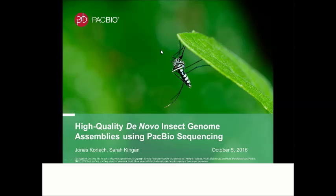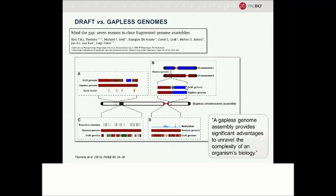I would like to give a brief introduction about PacBio sequencing, and then Sarah will give a detailed description of the PacBio workflow and one example of a recent project done on insect genome sequencing. To this audience, I probably don't have to stress the importance of, or the difference between, draft and gapless genomes. I thought this is one paper I really liked: 'Seven Reasons to Close Fragmented Genome Assemblies,' and the authors highlight very nicely that a gapless genome assembly provides significant advantages to unravel the complexity of an organism's biology.